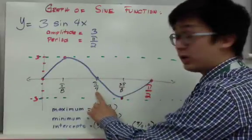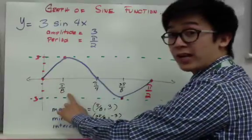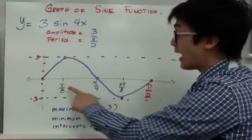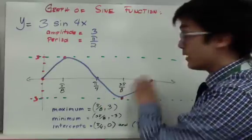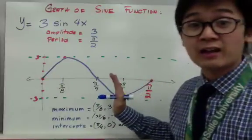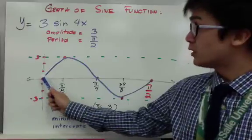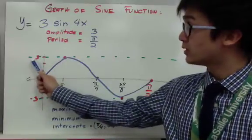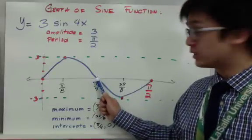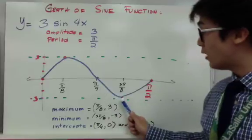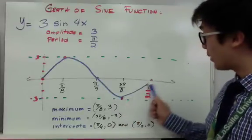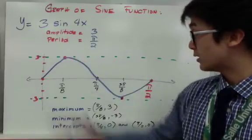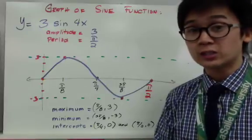To find the third partition, I add π over 8 and π over 4 to get 3π over 8. These four partitions are very important because they are used to analyze the sine function. Starting at (0, 0), the graph goes up until it hits the amplitude at positive 3, then comes back down through the x-axis, goes down to the minimum point at negative 3, and then starts going up again.